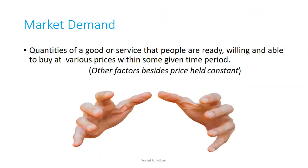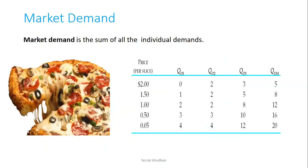Market demand is the quantities of a good or service that people are ready, willing, and able to buy at various prices within some given time period, with other factors besides price held constant. This is because some factors other than price affect demand, so we keep them constant to see the relationship between quantity demanded and price. It's very important to differentiate between market demand and individual demand — market demand is the sum of all individual demands.